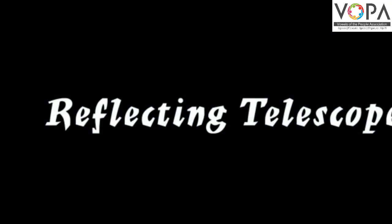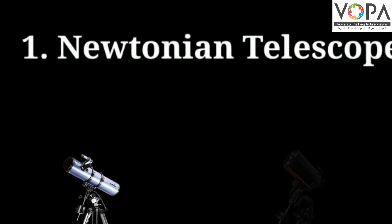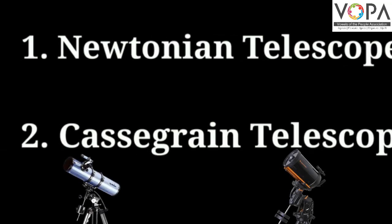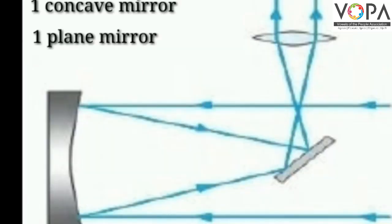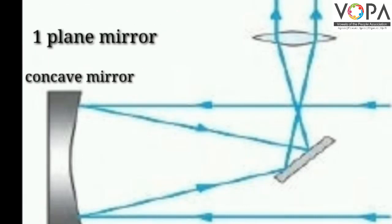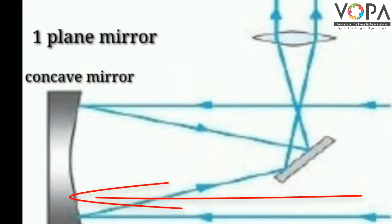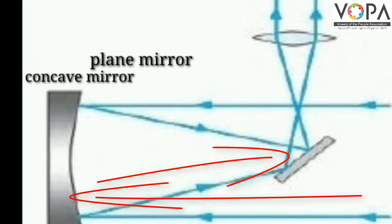There are two types of reflecting telescope: Newtonian telescope and Cassegrain telescope. In the Newtonian telescope, one concave mirror and one plane mirror is used. The Newtonian telescope is used to receive the light coming from the source and reflect it to the plane mirror.